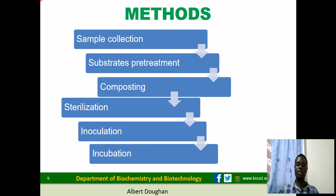The proximate composition analysis included protein contents, ash contents, fiber contents, and moisture contents.